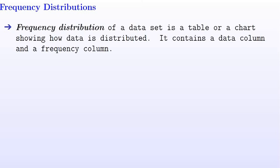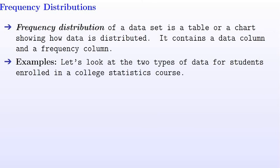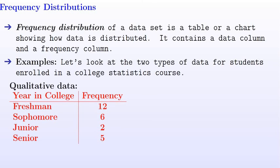Let's look at two types of data for students enrolled in a college statistics course. Looking at this qualitative data, we are given two columns: one column is year in college, and the other column has frequency. This data tells us there are 12 freshmen, six sophomores, two juniors, and five senior students enrolled in a college statistics course.